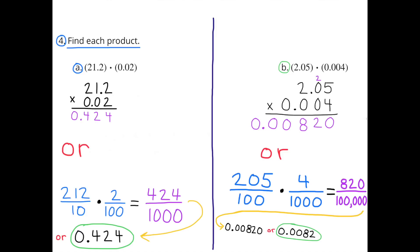Number 4: Find each product. Problem A: 21 and 2 tenths times 2 hundredths. You can set it up as a multiplication problem like I did in this first example on the top, or what I find more interesting is multiply them as fractions. I have this set up on the bottom left-hand corner. 21 and 2 tenths times 2 hundredths equals 424 thousandths. Or, as a decimal, 0.424.